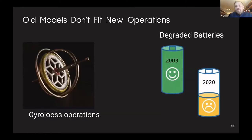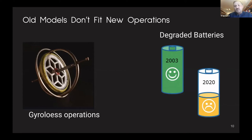So what is the problem? Why is machine learning needed? The most important reason is that the old models don't fit the new planned operations. First, the batteries are degraded — they were from year 2003, and now it's 2020. All the cycles of filling and emptying degraded their performance. Similar to your cell phones: the more you empty and refill the battery, the less efficient it becomes.